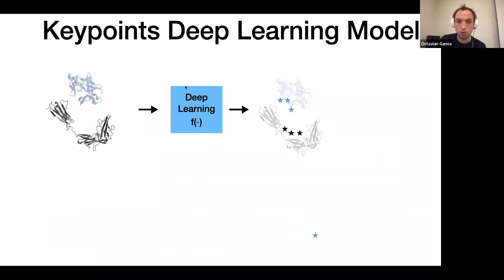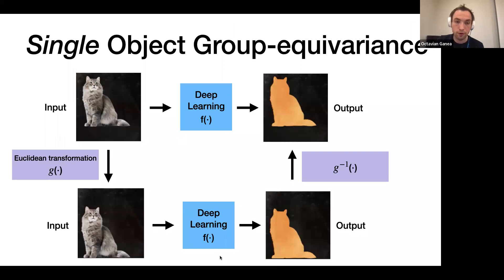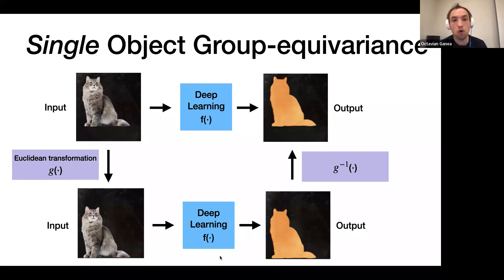Our deep learning architecture — EquiDock — takes two proteins as input in arbitrary orientations and rotations, and predicts two key point sets. Before describing the architecture, I want to highlight the important notion of incorporating Euclidean symmetry — rotations and translations — into deep learning models. Convolutional neural networks were the first architecture incorporating translation equivariance, and there are many follow-up works generalizing this to any types of group actions. Symmetries form a mathematical group, and you can define the idea of single-object symmetry equivariance.